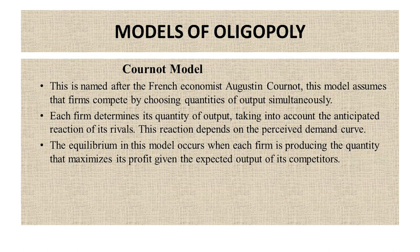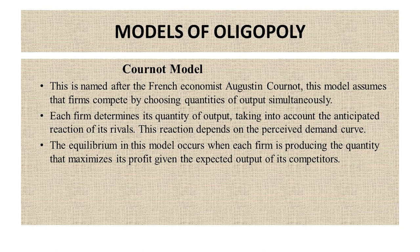Now we will discuss models of oligopoly. The first and most popular model is the Cournot model, named after the French economist Augustin Cournot. This model assumes that firms compete by choosing quantities of output simultaneously. Each firm determines its quantity of output taking into account the anticipated reaction of its rivals, and this reaction depends on the perceived demand curve. The equilibrium occurs when each firm is producing the quantity that maximizes profit given the expected output of its competitors.